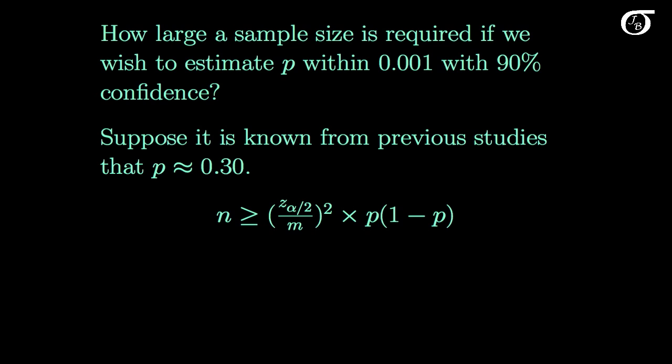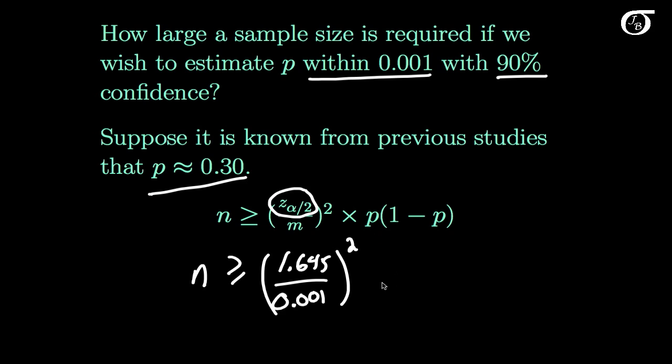We've got our same formula. And we need our N to be bigger than or equal to. And the Z value for 90% confidence, we should know by now, is 1.645. And the M value, we want to estimate P within 0.001. So that's 0.001. That quantity gets squared. And I'm going to use my estimate of P here of 0.03. So I'm going to multiply that by 0.30 times 1 minus 0.30.